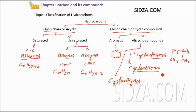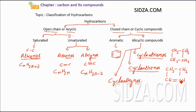Cycloalkenes are cyclic compounds that contain a double bond. For example, CH2 single bond CH2, then CH double bond CH with a single bond closing the ring — this is a cycloalkene because there is a double bond. Cycloalkynes are cyclic compounds with one triple bond; if a cyclic compound contains a triple bond, it belongs to cycloalkynes.